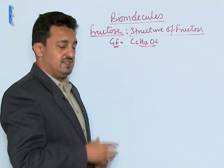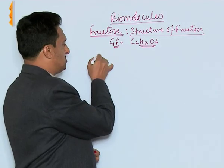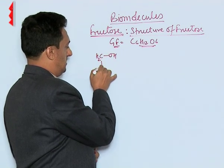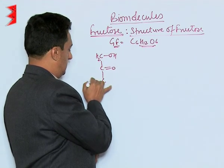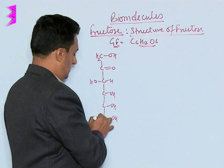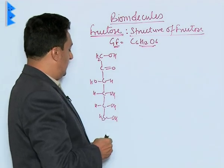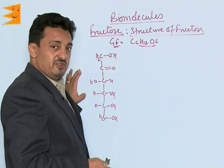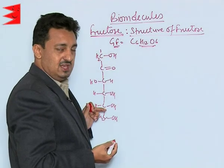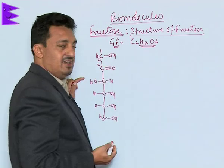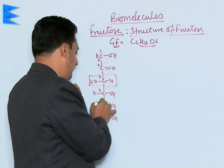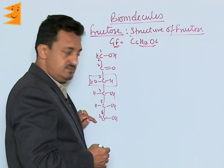This is the spatial straight-chain structure of the fructose molecule. It is polyhydroxy, having 5 OH groups. The first carbon has an OH group, the second carbon contains the ketonic group, the third carbon has an OH group on the left-hand side, and the fourth, fifth, and sixth carbons each contain one OH group on the right-hand side.